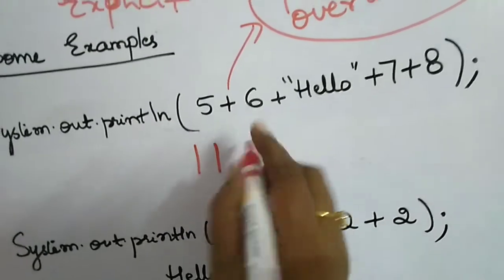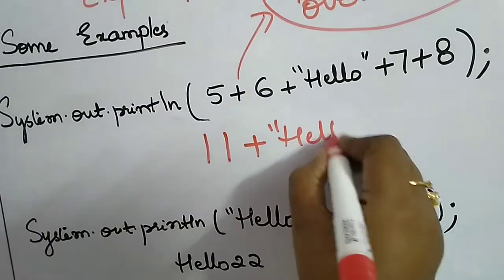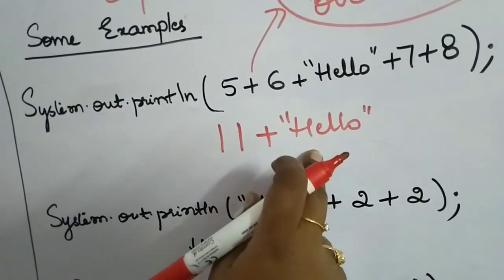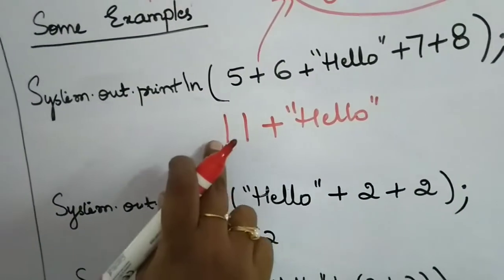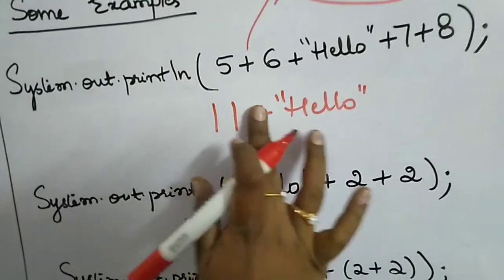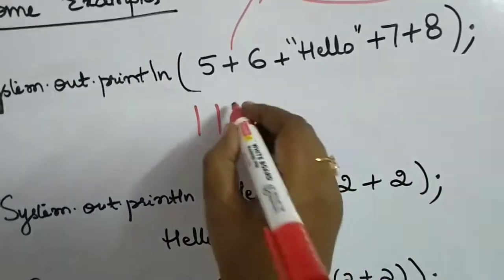Now eleven plus hello. Since one of its operands is of string type, it will convert this eleven also into string type and concatenate these two, saying it is 11Hello.